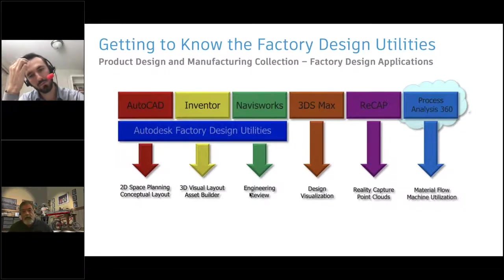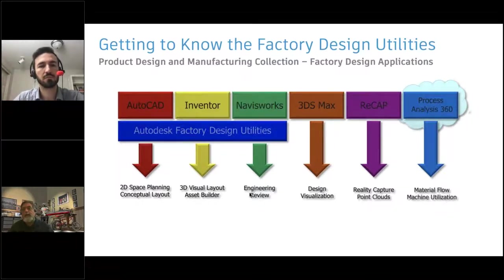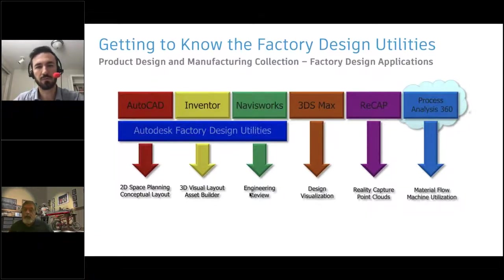Eventually you'll reach a saturation factor in 2D where you need to move into the 3D side of things. You can move seamlessly from the 2D workflow into the Inventor workflow for 3D factory development. Once in 3D with Inventor it almost becomes a cycle — you'll see yourself going back to AutoCAD and adjusting 2D data that automatically updates the 3D data, and vice versa.